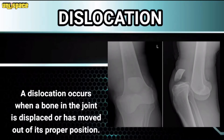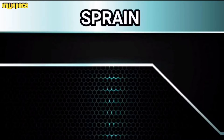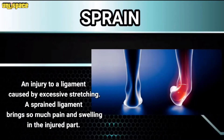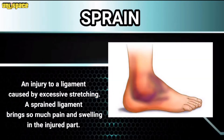A dislocation occurs when a bone has moved out of its proper position. Sprain: an injury to a ligament caused by excessive stretching. A sprained ligament brings so much pain and swelling in the injured part.